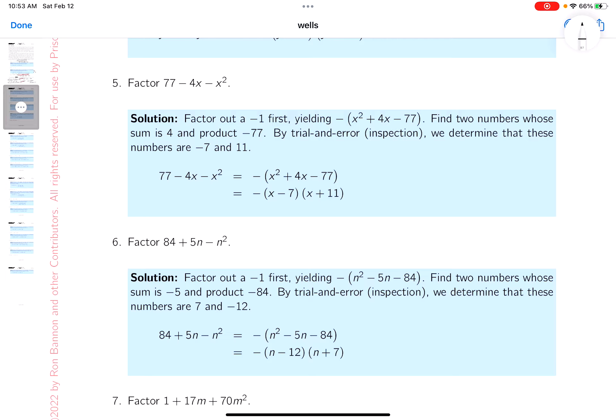If I were doing the problem, I would simply factor it as it is written. I see the 77 and I see the x squared in the end, so I'm going to say the end is x and x. Then I'm looking at the 77 and I'm wondering what two numbers would multiply together to be 77.